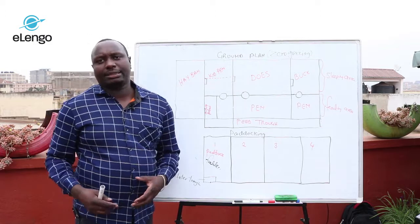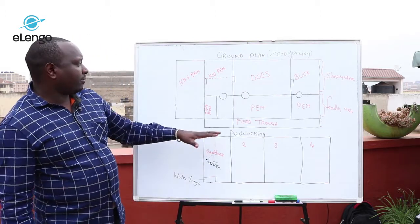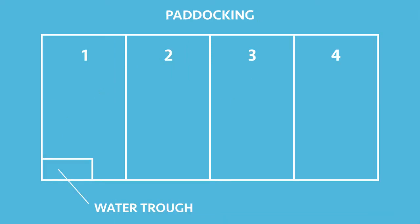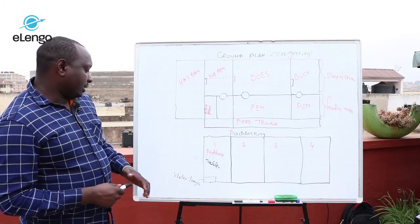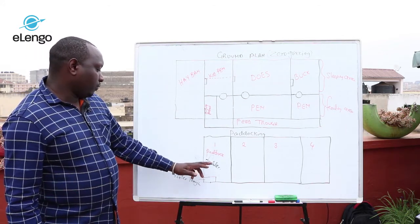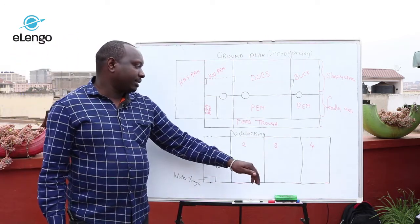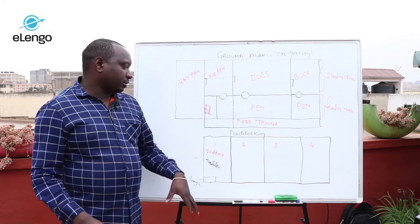Paddocking applies where the farmer has a large piece of land. Where the farmer has a limited area of land, a zero grazing system can be applied instead. In the paddock, the most common equipment found is the water trough, because animals must have water, as well as mineral troughs to supply the necessary minerals to the animals. You can also provide some shade to make sure the animals are not exposed to direct sun.